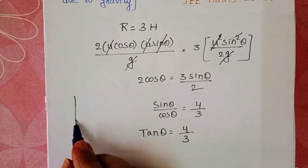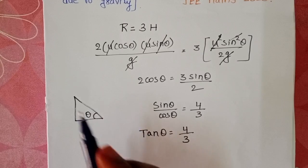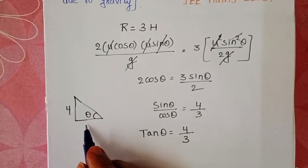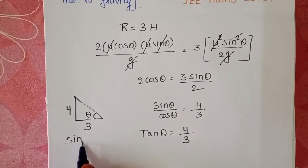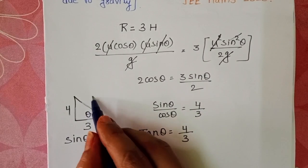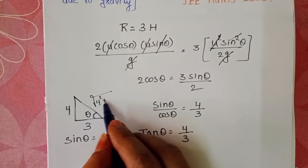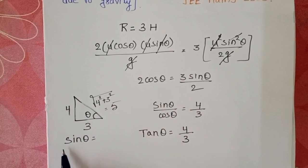Draw the right angle triangle. We know tanθ equals opposite side by adjacent side, 4/3. From this triangle, sinθ equals, this hypotenuse becomes square root of 4² plus 3². Square root of 25 equals 5.